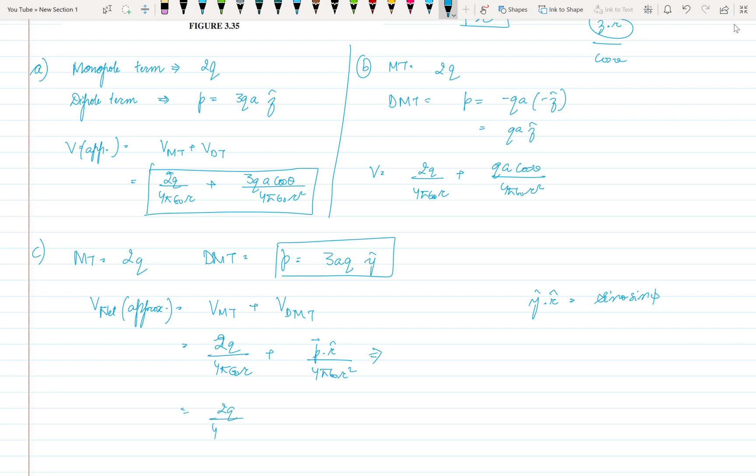So 2Q upon 4 pi epsilon naught R plus what is dipole moment: 3QA sine theta sine phi upon 4 pi epsilon naught R square. So this is the approximate potential for this figure C part.